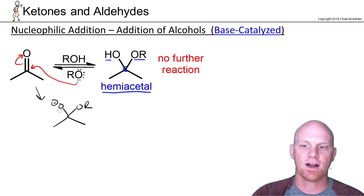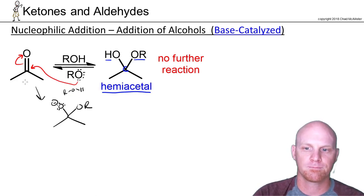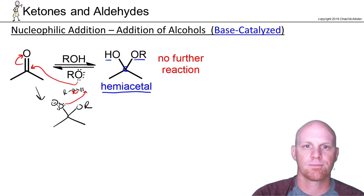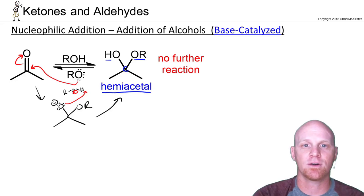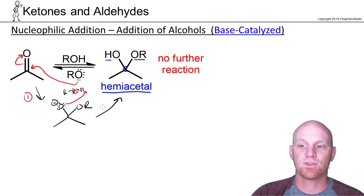That forms our alkoxide ion. Then we'll protonate it — in this case, not by water because we don't have water, but by a molecule of the alcohol itself. Those two steps get us our hemiacetal. Two steps, just like base-catalyzed hydration: first, nucleophilic attack; second, protonation.